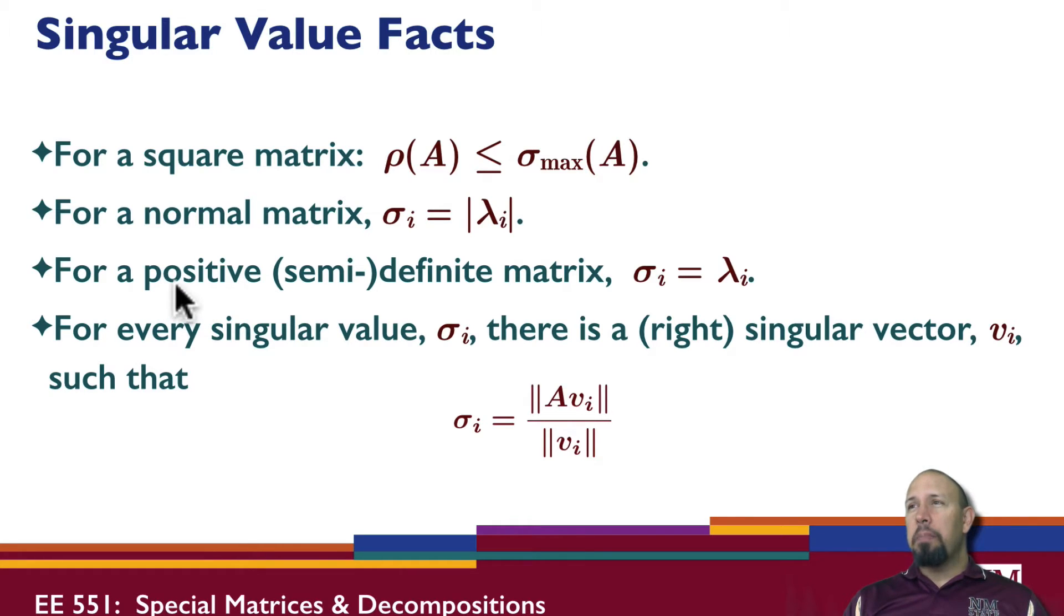If my matrix is a positive or positive semi-definite matrix, then we have that the eigenvalues are equal to the singular values. So we've seen those things. For every singular value sigma i, there is a right singular vector vi such that sigma i is equal to the norm of Avi over the norm of vi.